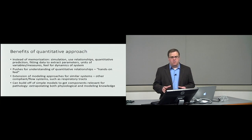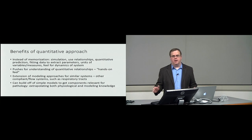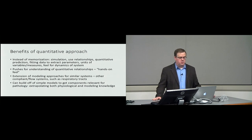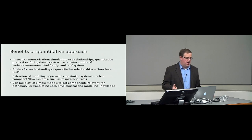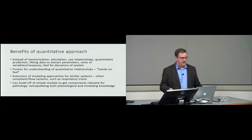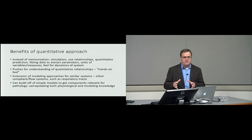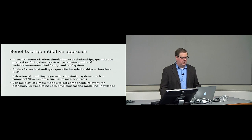There are a lot of benefits to this quantitative approach. Students coming out of this short exercise have a good understanding of arterial compliance, resistance, pulse pressure, stroke volume, and the units associated with those. They'll be able to use those relationships for predicting behavior in a variety of conditions when parameters change. They know how to extract parameters, understand the units of measurements and variables, and get a real feel for the dynamics of the system — pushing for quantitative understanding instead of memorization through hands-on experimentation.